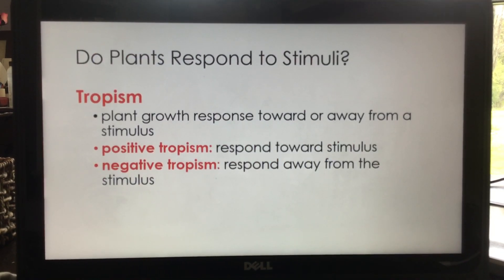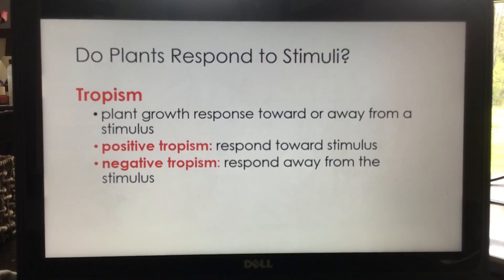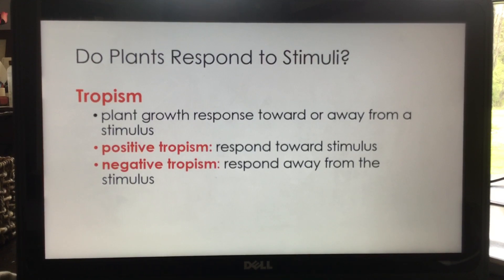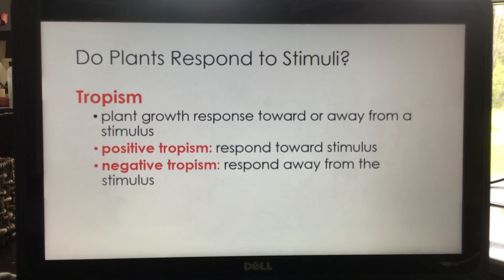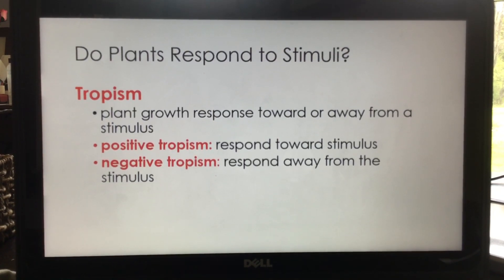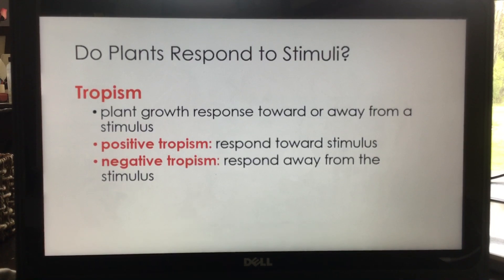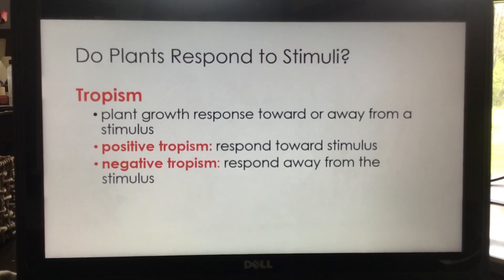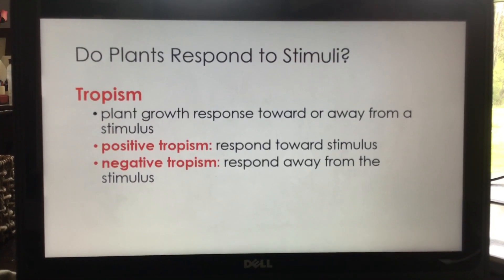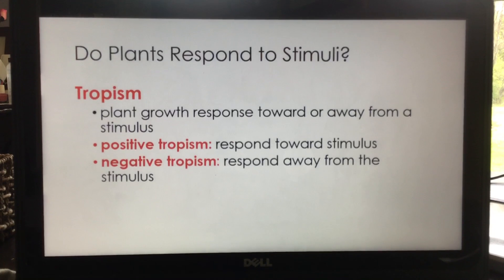Do plants respond to stimuli? Sure they do! Tropism is a plant's growth response toward or away from a stimulus. There's positive tropism, where they move toward the stimulus, and negative tropism, where they move away from the stimulus. They might send out roots away from something harmful, or if they need more water, they'll send roots deeper into the ground or toward the water area.